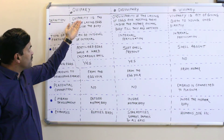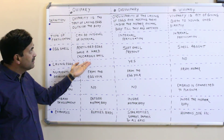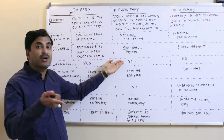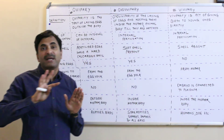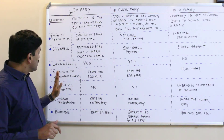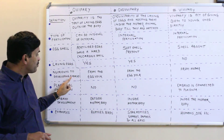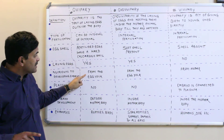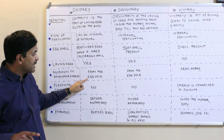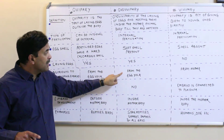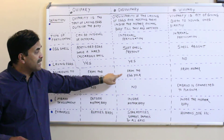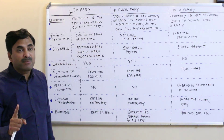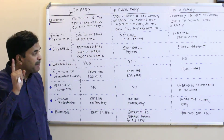Regarding laying of eggs: oviparous organisms lay eggs outside the body; ovoviviparous organisms also lay eggs but inside the mother's body; viviparous organisms do not lay eggs at all. For nutrients to the developing embryo: in oviparous and ovoviviparous organisms, nutrients are provided by the egg yolk. In viviparous organisms, nutrition is provided to the developing embryo by the mother via the placenta.